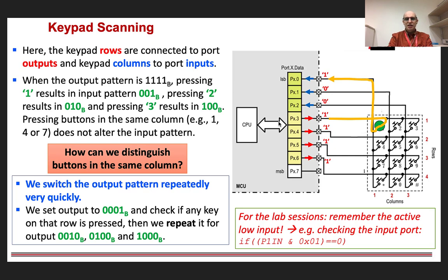Now let's just read through what it says here. It says, when the output pattern is 1, 1, 1, 1 binary, that means 1, 1, 1, 1 on port pins 3, 4, 5, and 6, and if we press key 1, it results in an input pattern on the three lower bits of 0, 0, 1 binary. If we press 2, then the input pattern will be 0, 1, 0. If we press 3, it would be 1, 0, 0.